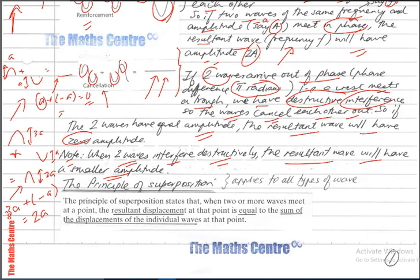The principle of superposition — extremely important and it applies to all types of waves. The principle states that when two or more waves meet at a point, the resultant displacement at that point is equal to the sum of the displacements of the individual waves at that point.